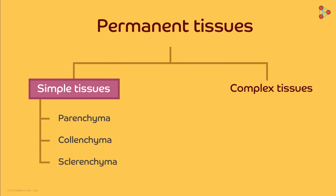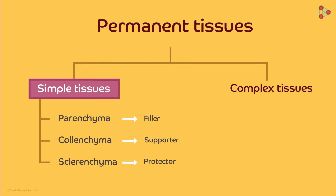If you must know in one word what each of these tissues do: parenchyma can be called a filler tissue, colenchyma is a supporter, while sclerenchyma is a protective tissue. We will look at each of these tissues in detail in our coming videos. Stay tuned!